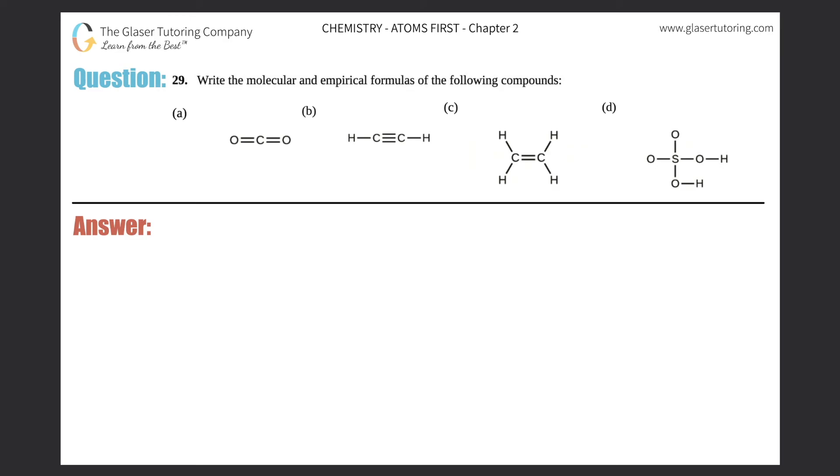Number 29. Write the molecular and empirical formulas of the following compounds. Then we got A through D. So I'm just going to write A, B, C, and we'll stick D over here.